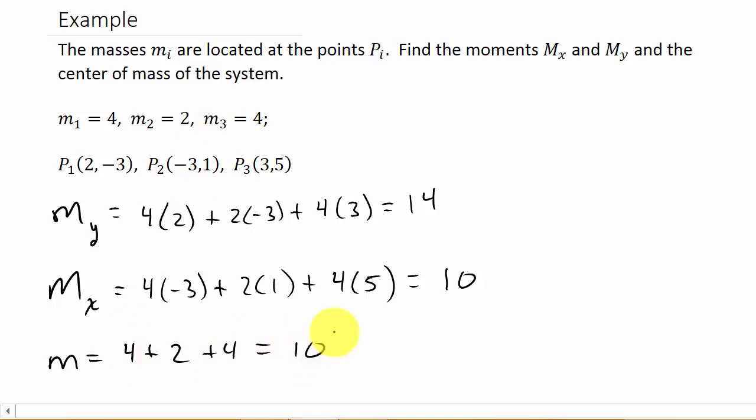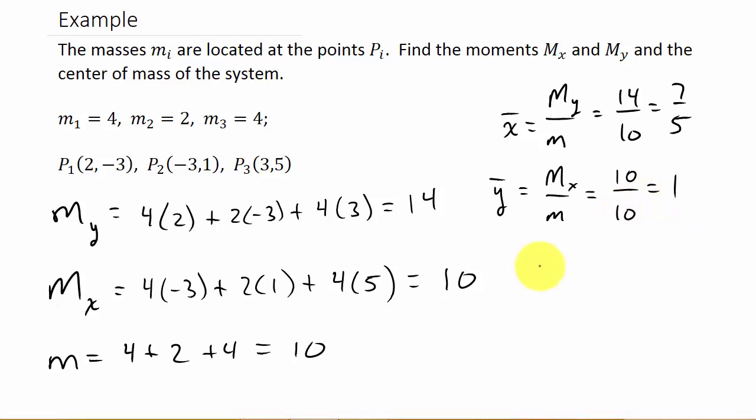Now we're ready to find x̄ and ȳ. Remember x̄ = Mᵧ/m, where m is the sum of the masses. So x̄ = 14/10 = 7/5. And for ȳ, that's Mₓ/m = 10/10 = 1. So our center of mass is (7/5, 1).